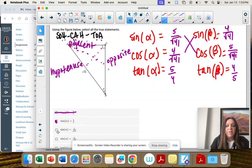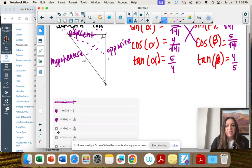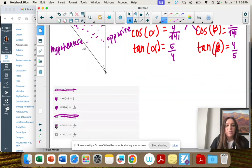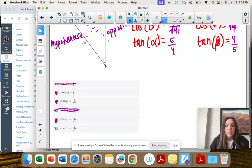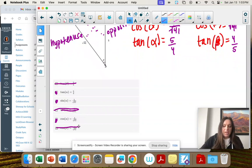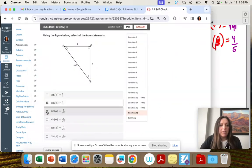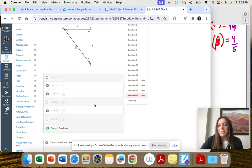Sine of alpha, 5 over square root of 41. Sine of alpha, nope, we just did that one. Cosine of alpha is 4 over square root of 41. Cosine of beta, nope. So actually on this one, it was all the alphas that were correct and none of the betas. But you still need to find them just to make sure.